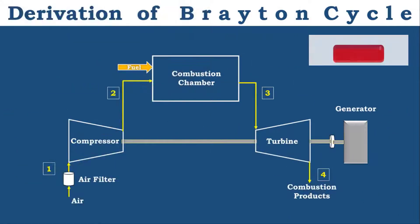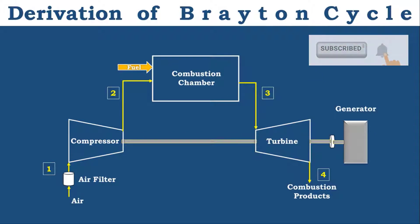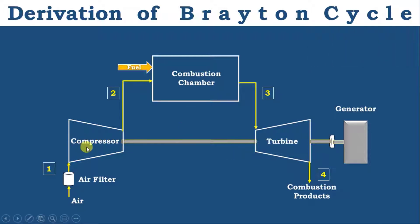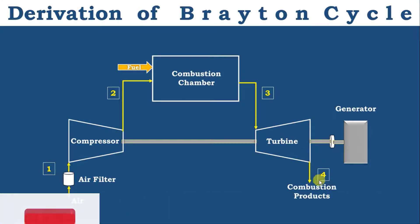The Brayton cycle consists of three major components: the compressor, combustion chamber, and turbine. As you can see in the diagram, the compressor is placed between points 1 and 2, the combustion chamber is placed between 2 and 3, and the turbine is placed between 3 and 4. We will see each one by one.